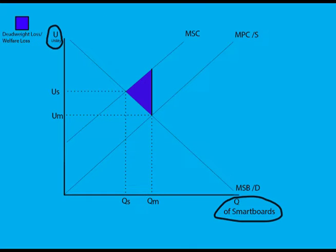Q represents the amount of classrooms mandated by our high school to have smart boards, and U represents the utility of our high school.